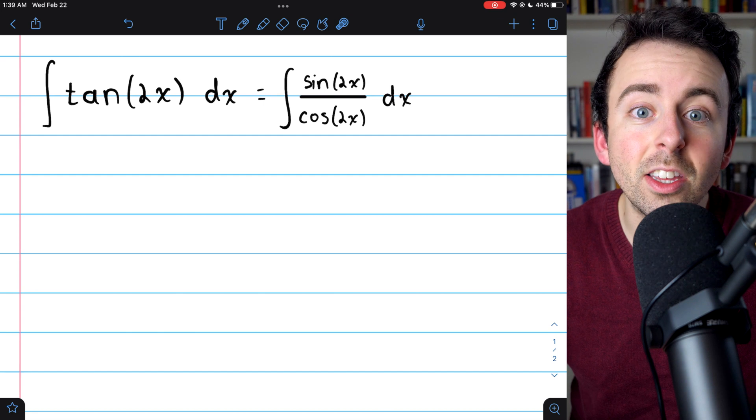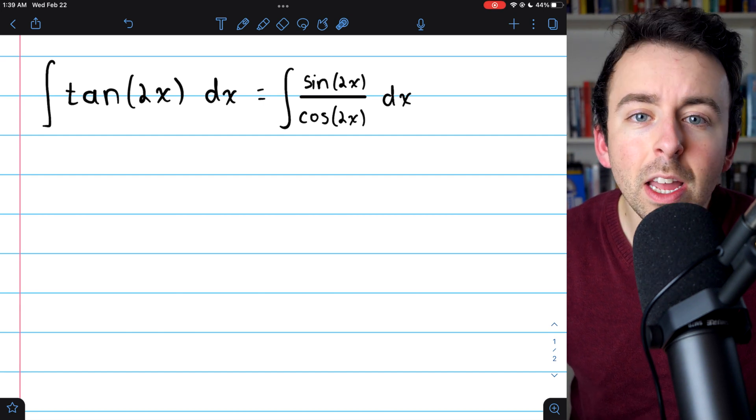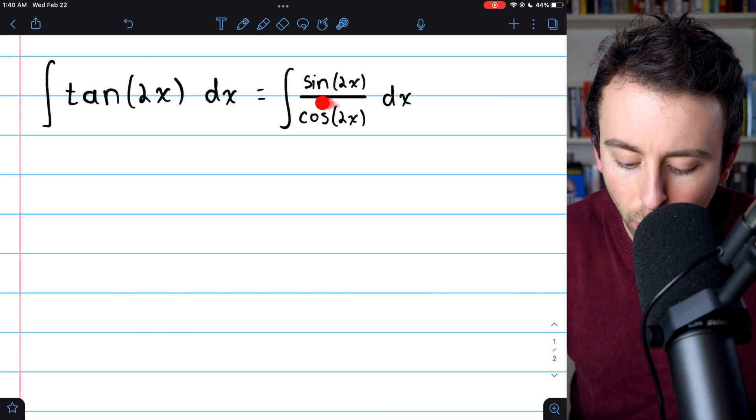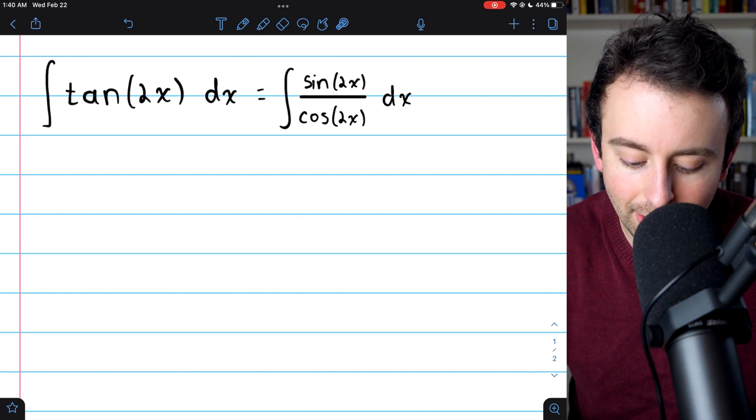Now it's more evident that this is a u-substitution problem, because if we let u equal cosine of 2x, which is in the denominator,